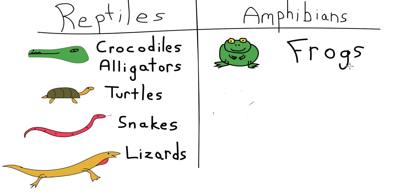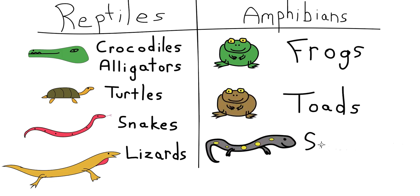Amphibians include frogs, toads, salamanders, and a lesser known species called cecilians.